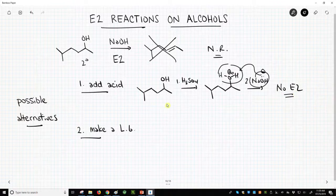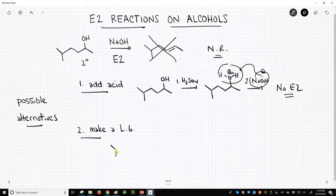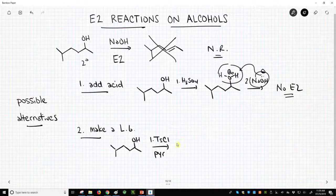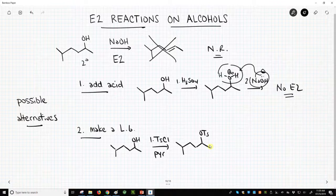Okay, what other leaving group options do we have? We could take our alcohol, and in a step, we could treat it with tosyl chloride. Tosyl chloride and pyridine. That would make a leaving group. Now our leaving group doesn't have any of these excess acidic hydrogens, and this will work fine.